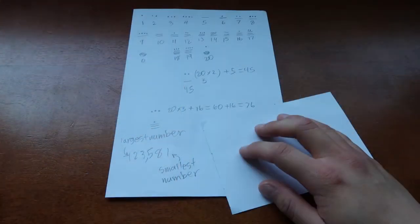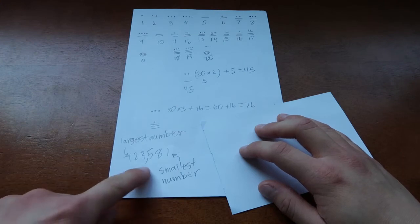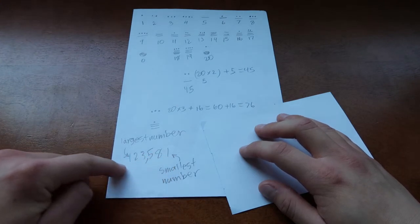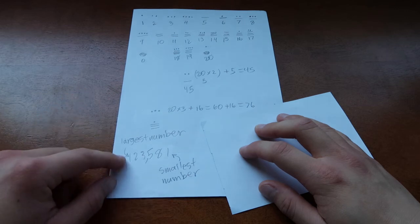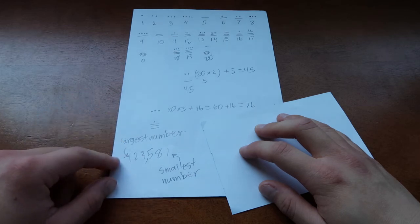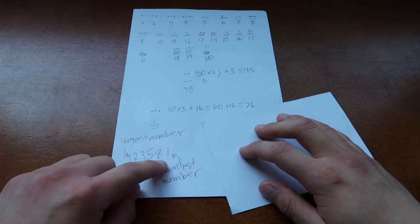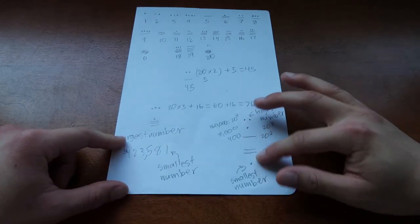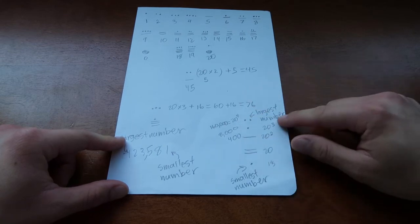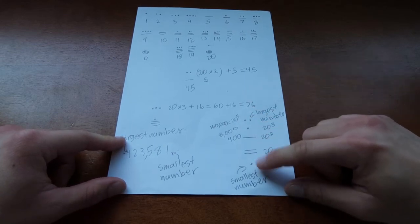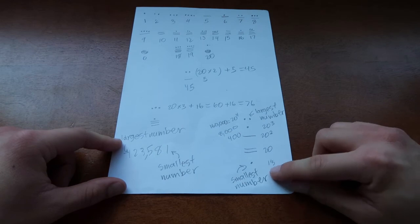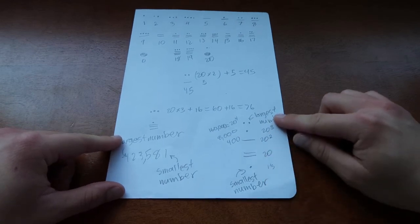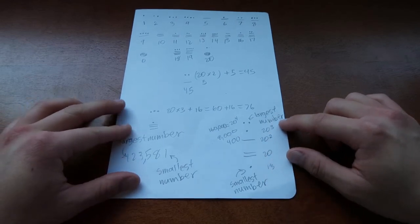So the Mayan numbers are arranged differently than our numbers. Our numbers are arranged horizontally, with the largest digit being all the way on the left and the smallest digit being on the right. The Mayan numbers are arranged similarly, but they are vertical, with the largest number being on top and the smallest number being on the bottom. And the higher you go up, you increase by powers of 20.